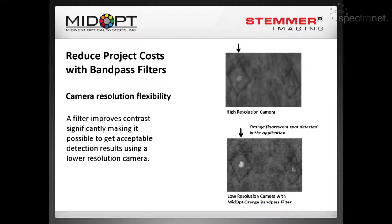Here's another interesting application. A customer was quoting a high-resolution camera to inspect for an orange dye — the resolution was good, but the contrast was not. The quote was too expensive because of the high-resolution camera. He went back, quoted a low-resolution camera, and used an orange bandpass filter. He was able to secure the job just by using the bandpass filter because they maximized the contrast.